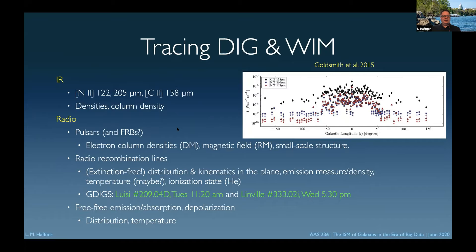Radio has a number of techniques. Pulsars in particular give us dispersion measure for free, and we look at rotation measure as well. A new possibility is the fast radio burst — can we extract some of the dispersion measure from FRBs to explore the galactic or Magellanic environment? Radio recombination lines are really one of the big work areas in radio right now. There's a GBT survey called GDIGS that Loren Anderson and his group have been doing, and I encourage you to check out related dissertation talks on diffuse ionized gas and the GDIGS survey.